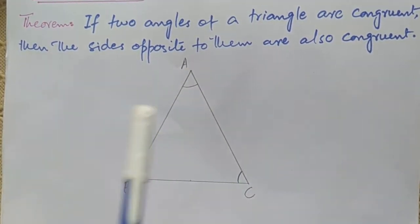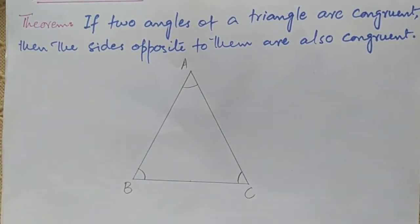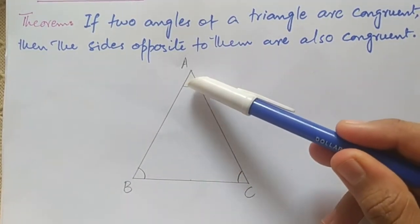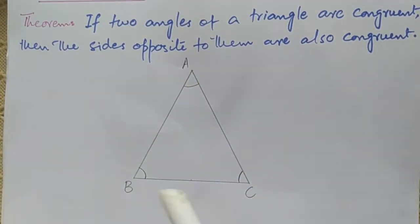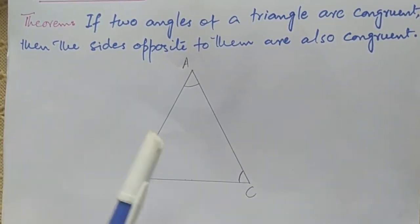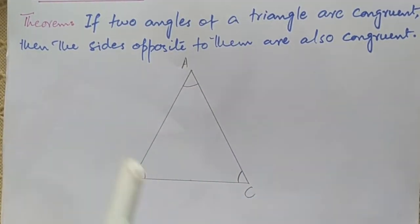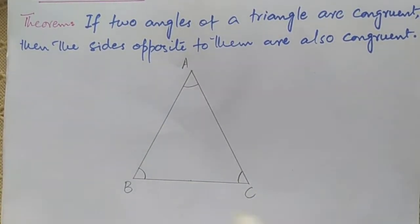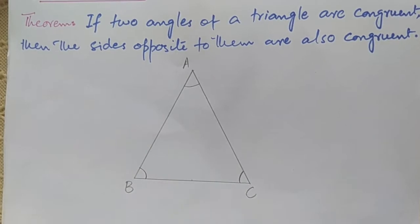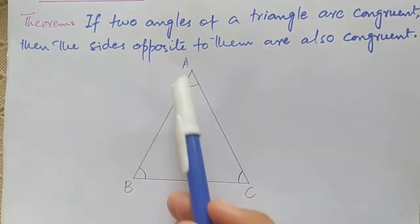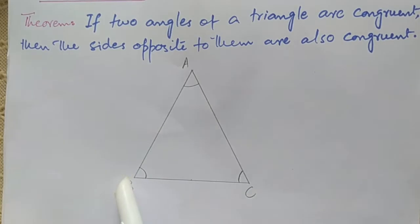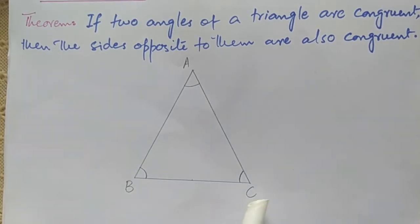Similarly, if angle A and angle C are equal, then their opposite sides will be equal. In that case, AB will be equal to BC.